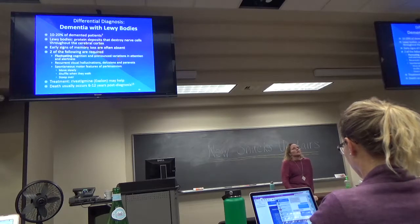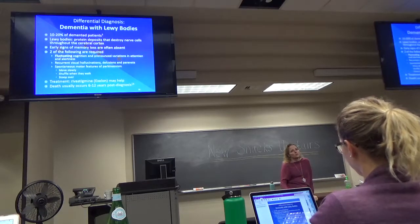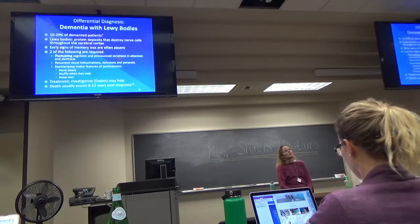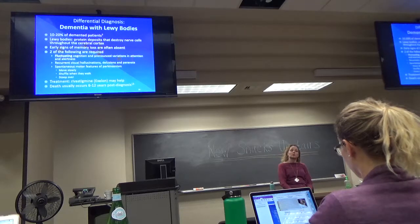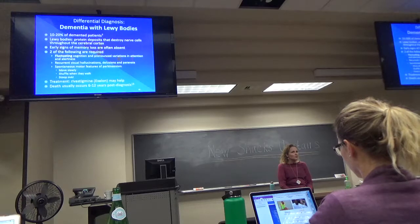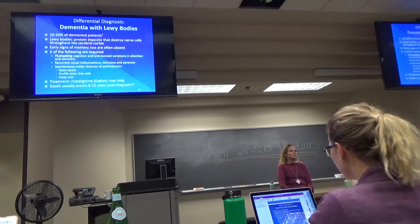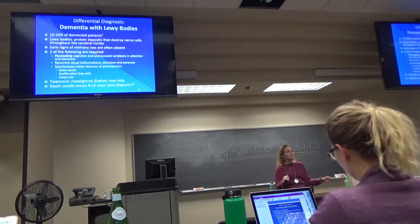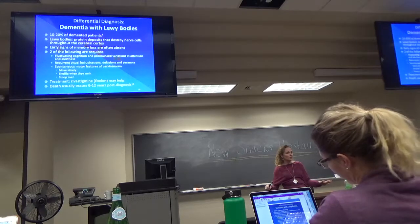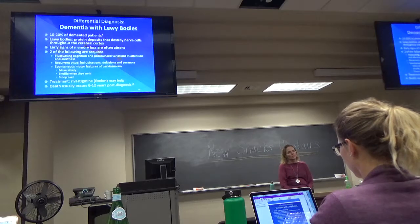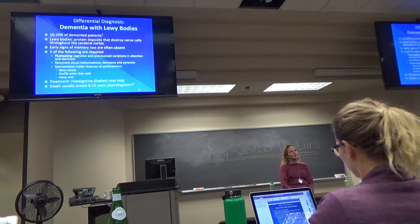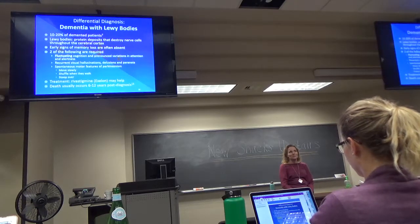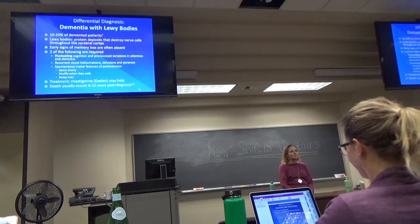Dementia with Lewy body disease: these patients have Lewy bodies, which are protein deposits in the nerve cells throughout the cortex of the brain. They're not going to have the early sign of memory loss that other dementias have. They need two of the following: fluctuating cognition with pronounced variations in attention and alertness; recurrent visual hallucinations, delusions, and paranoia; or motor features of Parkinson's. Treatment may help. Death is six to 12 years after diagnosis.